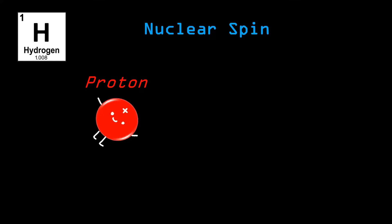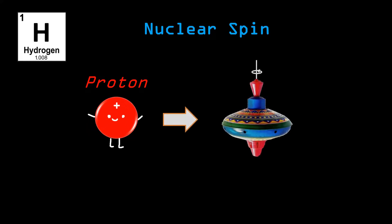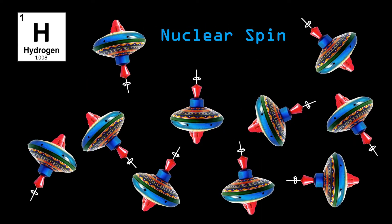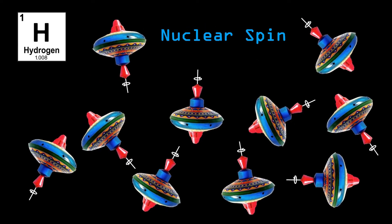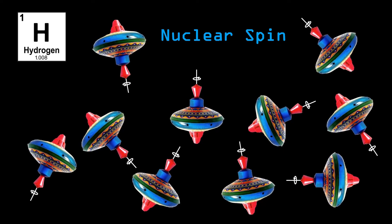The protons spin around their own axis, which is called nuclear spin. And you could basically compare it to a tabletop spinner. But of course, you have to remember that in the brain there are many, many hydrogen protons. And they are all oriented in a different direction and spin at different phases.